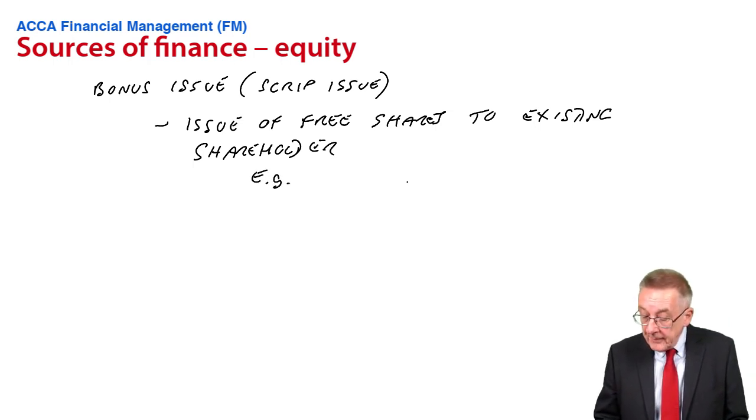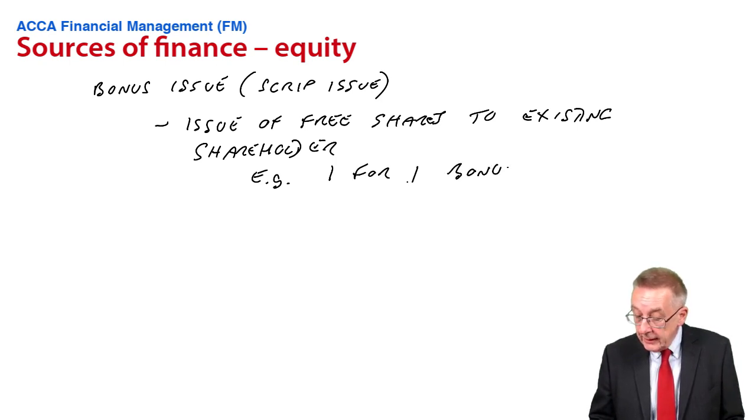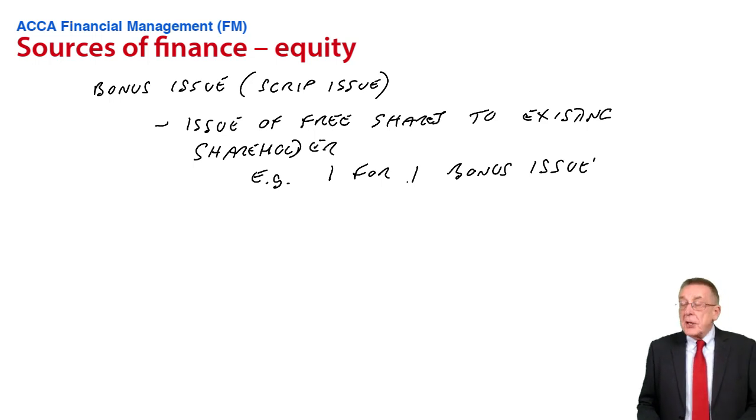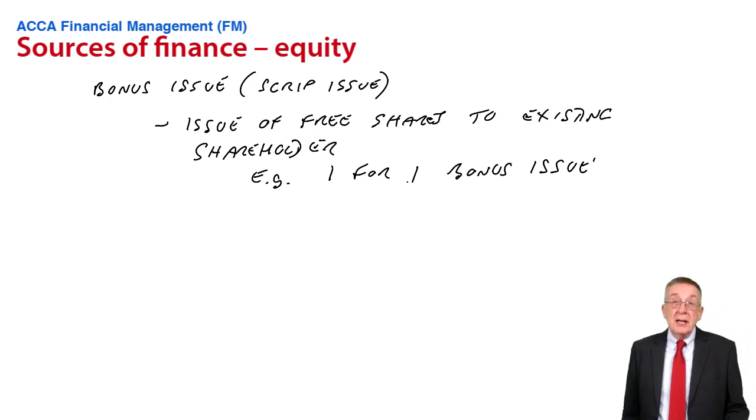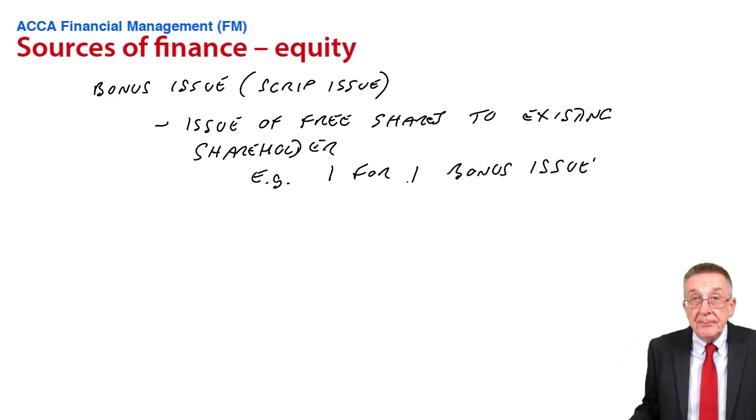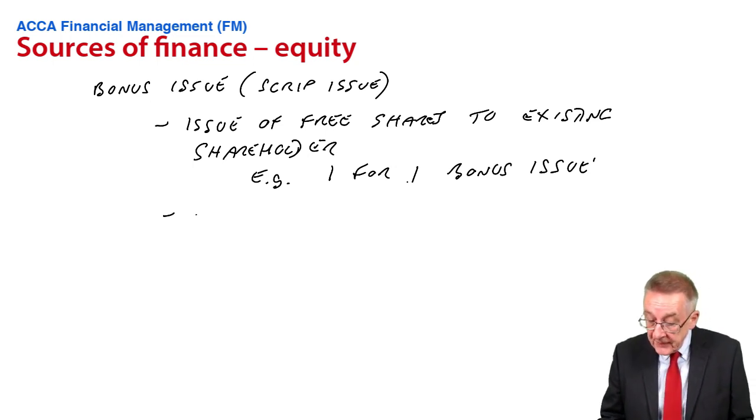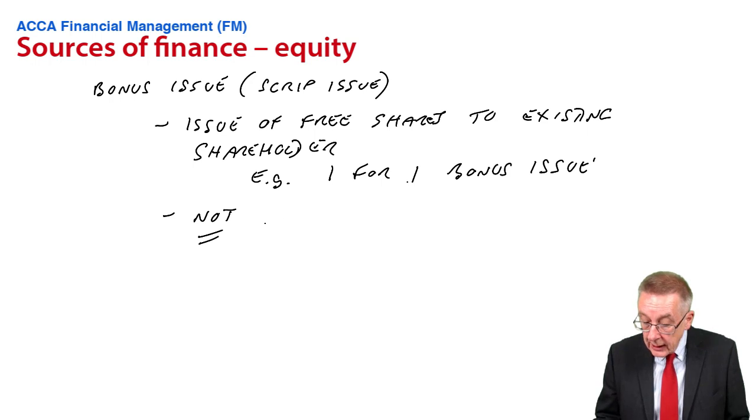So there might be, for example, a one-for-one bonus issue. The number of new shares you get issued depends on how many you currently have. If it's one-for-one, then if you've currently got 100 shares, you get given another 100. However, the shares are given free of charge. You're not paying for them, and so the company isn't raising any cash. It's not a source of finance.